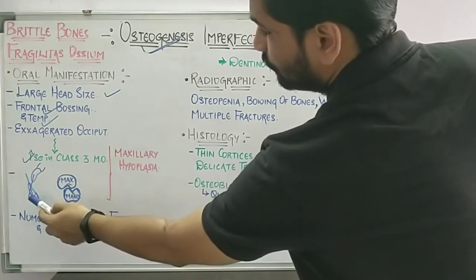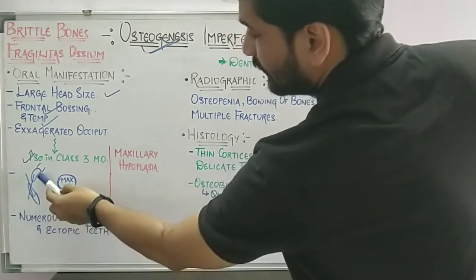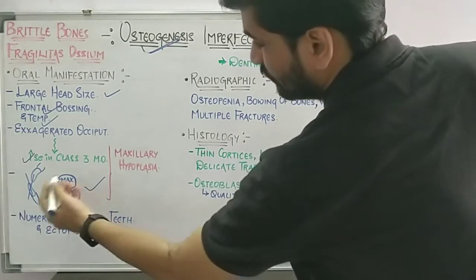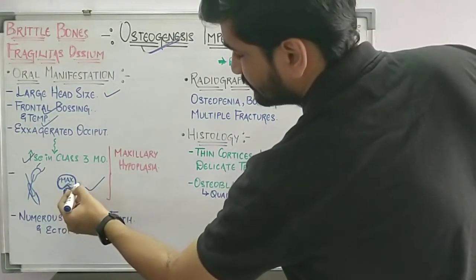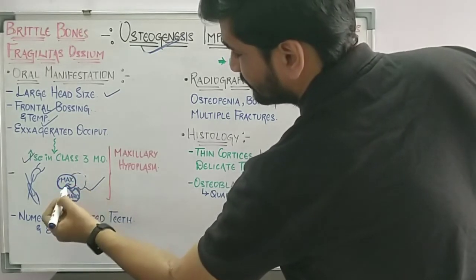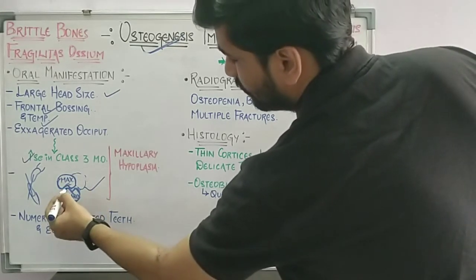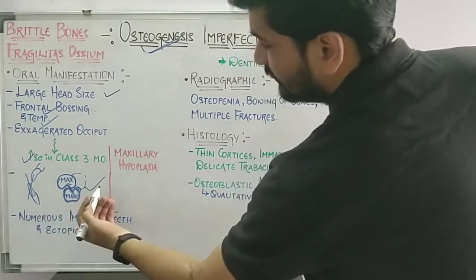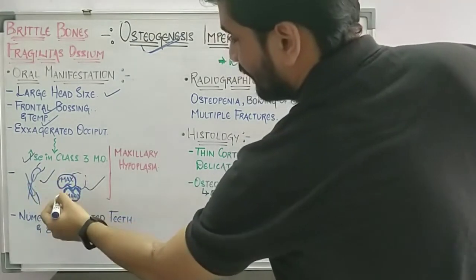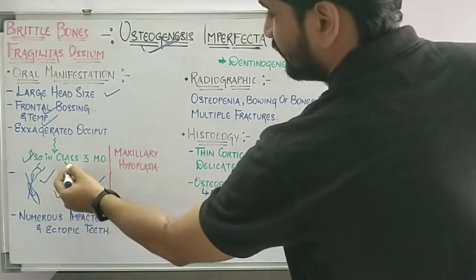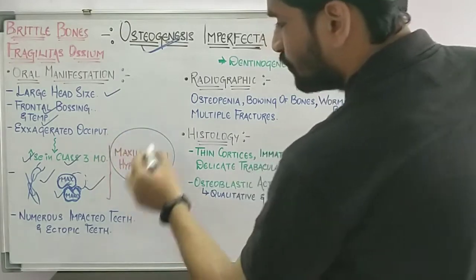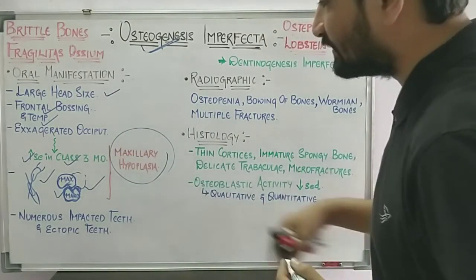Along with Class 3 malocclusion, you will see anterior crossbite, meaning the lower teeth are placed forward compared to the upper teeth. There is also posterior crossbite, where the lower teeth are buccally placed compared to the upper teeth, which is the opposite of the normal relationship.